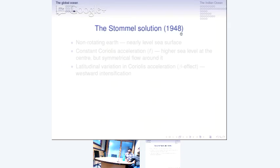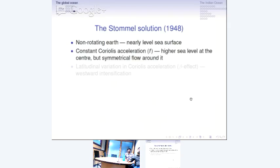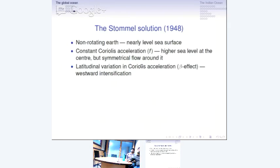The next remarkable development was courtesy Henry Stommel in 1948, two years after Sverdrup. Stommel carried out three kinds of calculations. He looked at first a non-rotating earth, and he got a nearly level sea surface. In the second experiment, he had a constant Coriolis acceleration F — he had higher sea level at the center, but symmetrical flow around it. Then he put in the beta effect, the latitudinal variation of Coriolis acceleration. Note that Sverdrup had it, but not in a form that gave the westward intensification. In the case of the Stommel solution, the boundary current naturally appears in the west, and it is a consequence of this beta effect. So there is something in the Sverdrup solution that does not account for the intensification occurring on the western boundary.